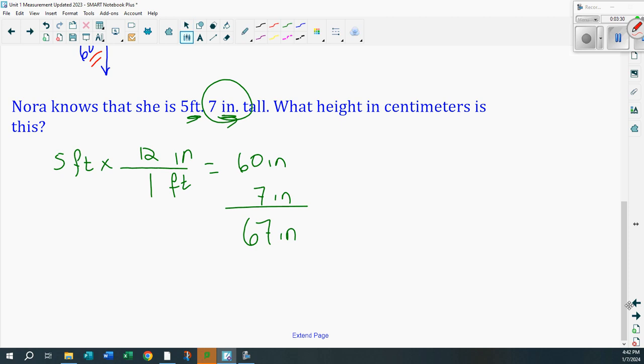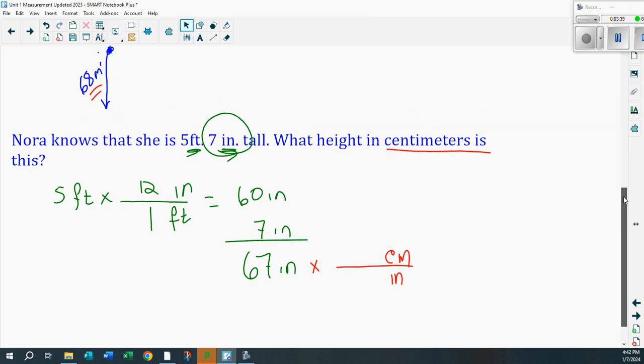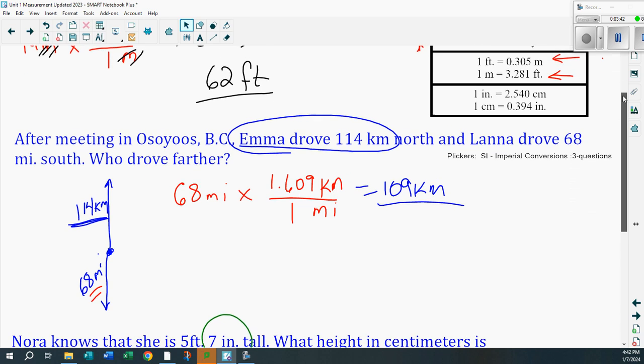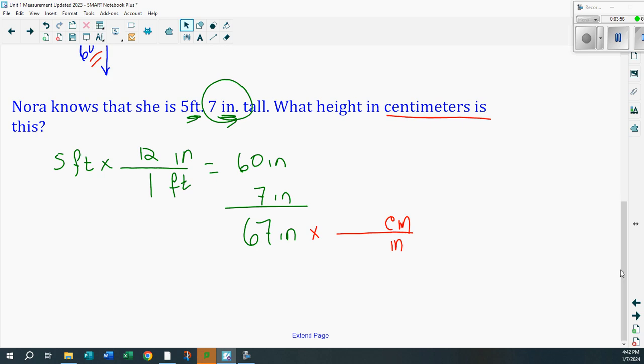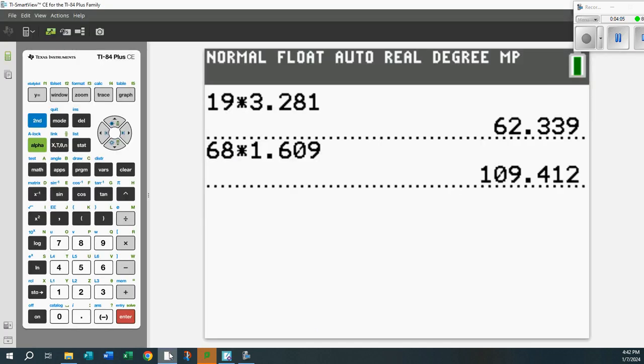We want to figure out how many centimeters that is. Simple. Inches on the bottom, centimeters on top. What's the conversion? Can you remember? I can't. So let's go back to our table. There it is. That's that one that's really important that we use this one here. That one, 2.540, right? So let's make sure we use that 2.540 centimeters. Here we go. 2.540 centimeters per one inch. So 67 times 2.540 works out to be 170 centimeters.